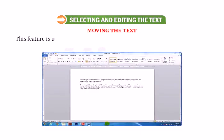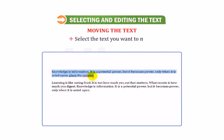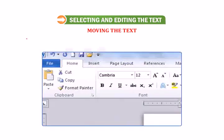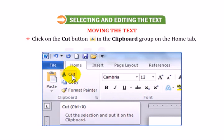Now let us learn how to move the text. This feature is used to move the text from its original location to a new location. Select the text you want to move. Click on the cut button in the clipboard group on the Home tab or press Ctrl plus X.